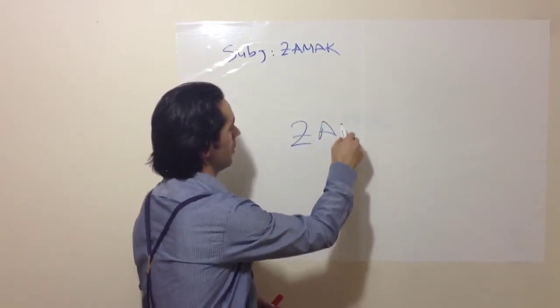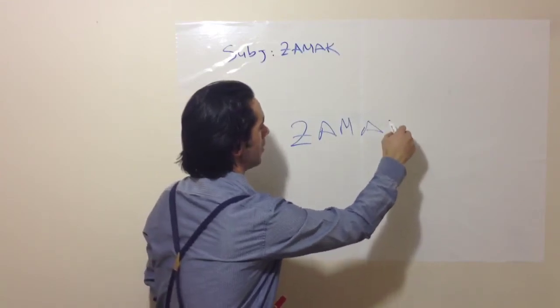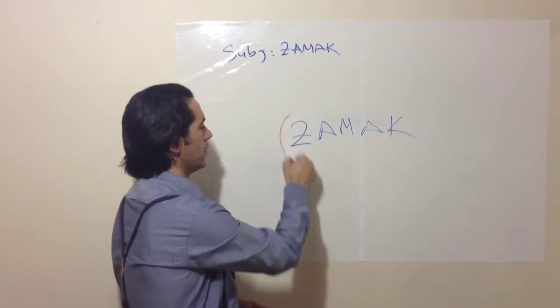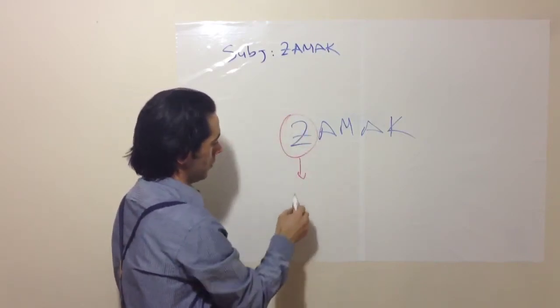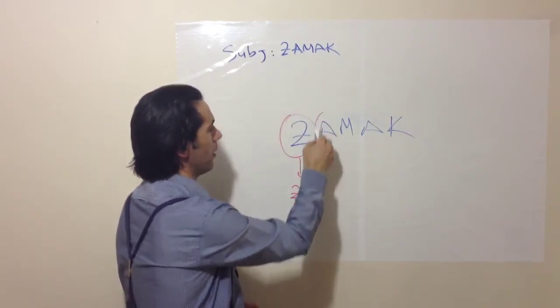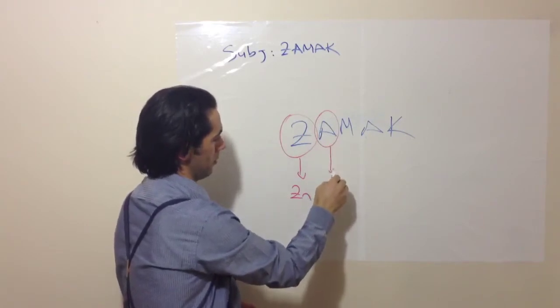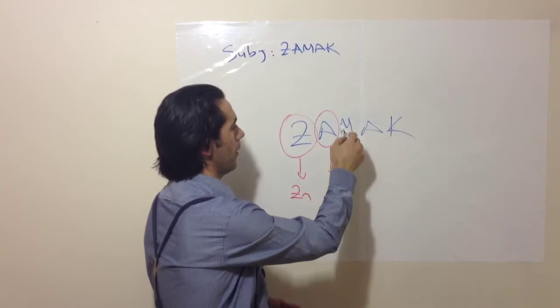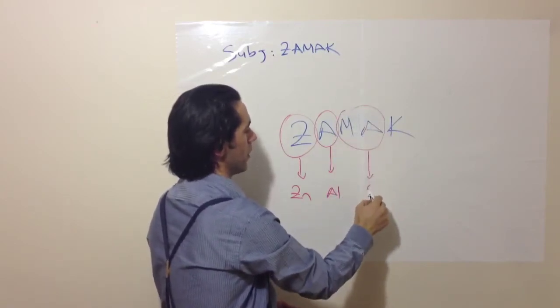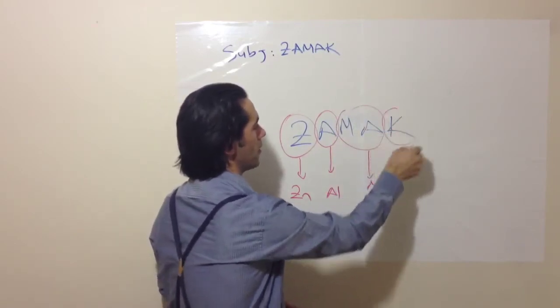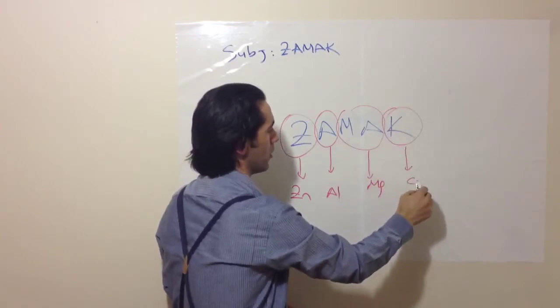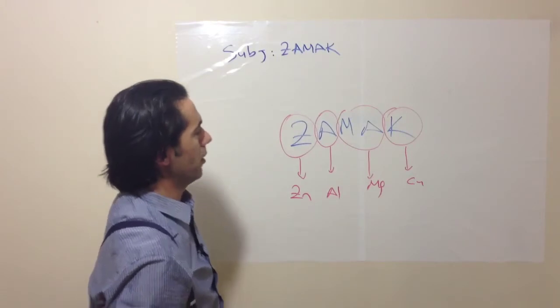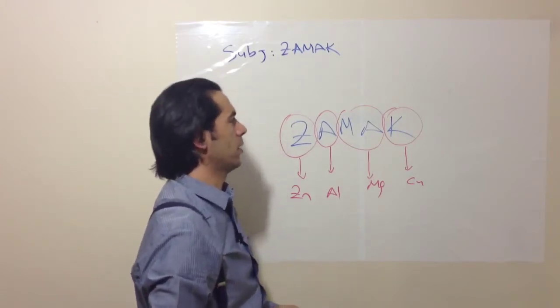Now I write here with capital letters. In our alloy, Z stands for Zinc, A stands for Aluminium, M and A stands for Magnesium, and K stands for Copper. That comes from German language - in German, that's Copper, not potassium, so you might be confused.